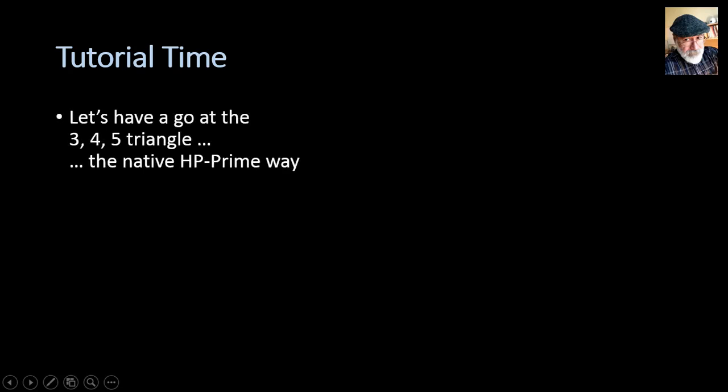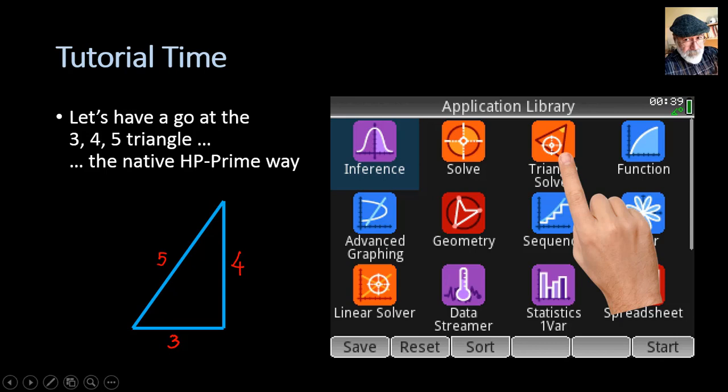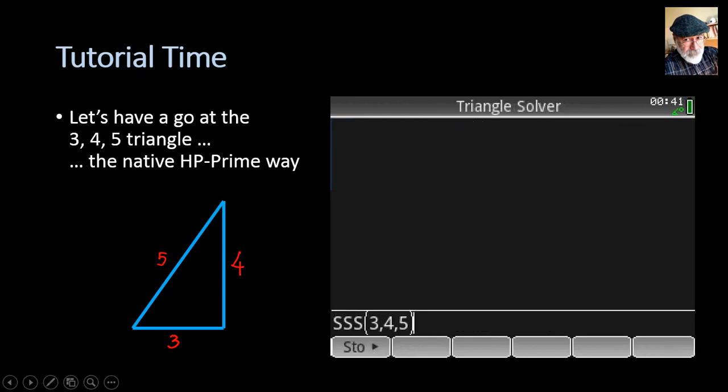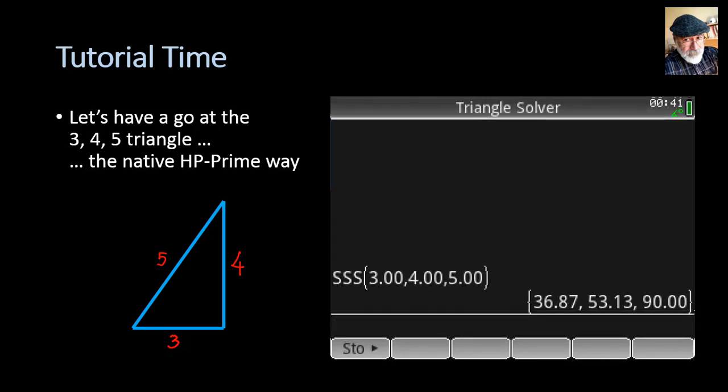Tutorial time. Let's have a go at the 3, 4, 5 triangle again, but using the native HP Prime way. Here's a triangle. Those are the sides. Let me select the triangle solver. First things first. And then we go to Home mode and type SSS 3, 4, 5. Not X. No. I am calling the native SSS inside the calculator. It works only if triangle solver is being selected. You see the triangle solver title at the top. I click enter. I have a solution. What is it showing me? It is showing me the 3 missing angles. The angle in front of 3, 37 degrees. The angle in front of 4, 53 degrees. And the angle in front of 5, 90 degrees. And that makes total sense to me.